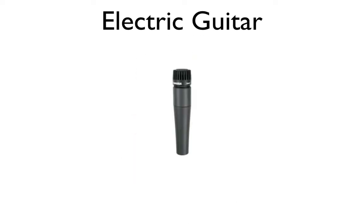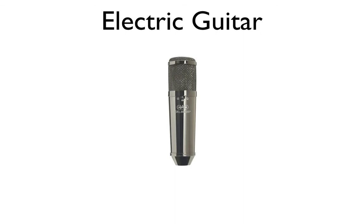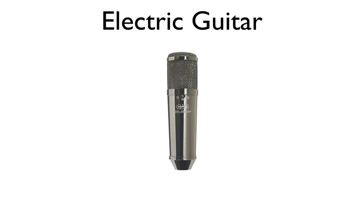For recording electric guitars, you could use a dynamic mic like the Shure 57 positioned close to the speaker cabinet. If you have a condenser mic, try placing it a few feet back. You could also use multiple mics and blend them together during the mixing process.